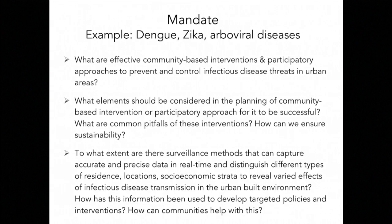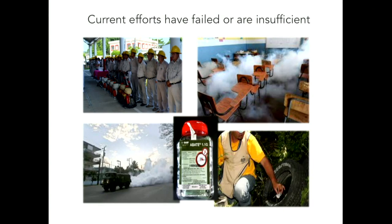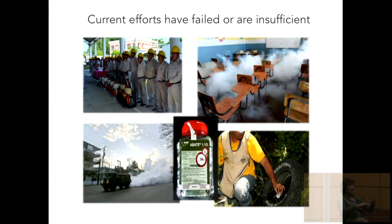We have a mosquito problem. Everyone gets upset about shark attacks, but it's the mosquito which is actually killing more people per year than anyone else. This shows the very wide distribution of Aedes mosquitoes across the entire globe. It's been recognized for a long time that current vector control strategies fail time and time again, as evidenced by increasing numbers of dengue cases spreading worldwide.